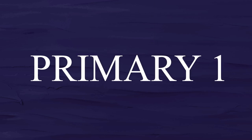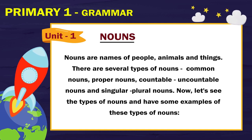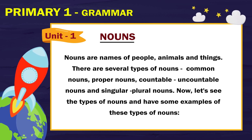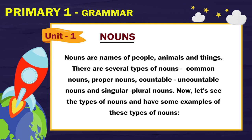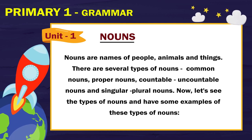Primary 1 Grammar: Nouns. Nouns are names of people, animals and things. There are several types of nouns: common nouns, proper nouns, countable, uncountable nouns, and singular and plural nouns.